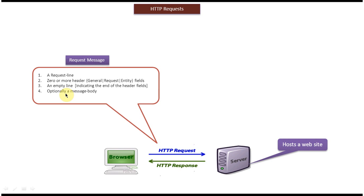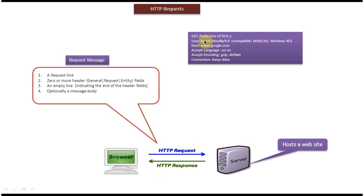The third part is an empty line indicating the end of the header fields, and the fourth part is the message body, which is optional. So these four parts are there in the request message. Now we will see a sample request message. This is a sample GET request — the first line is the request line and the remaining part is header fields.